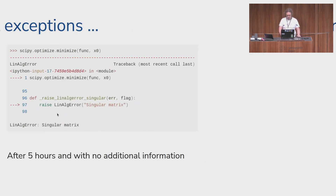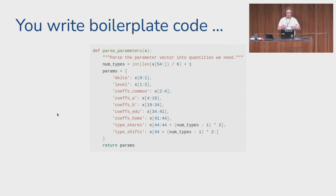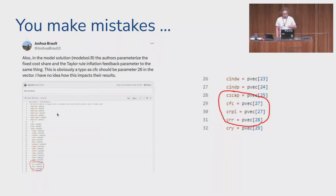You also find yourself writing a lot of boilerplate code. This is an example from a real project: most optimizer libraries require parameters to be a one-dimensional numpy array, so at the beginning of your objective function you first need to take this vector apart into smaller quantities you actually need in your calculations. If you do this, you very often make mistakes. In this example from a real project, they assign parameter number 27 to two different variables and don't use number 26 at all.